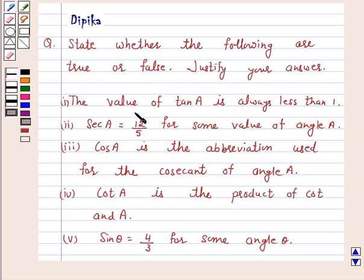Part 1: The value of tanA is always less than 1. Part 2: SecA equals 12 over 5 for some value of angle A. Part 3: CosA is the abbreviation used for the cosecant of angle A. Part 4: CotA is the product of cot and A. Part 5: Sin theta equals 4 over 3 for some angle theta.